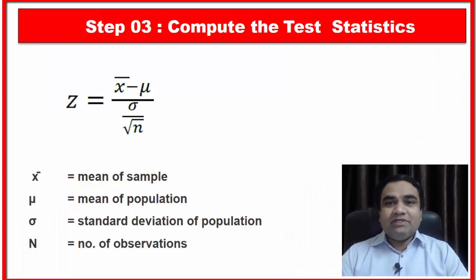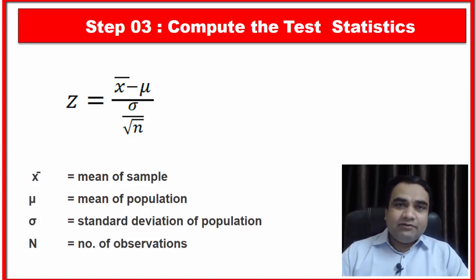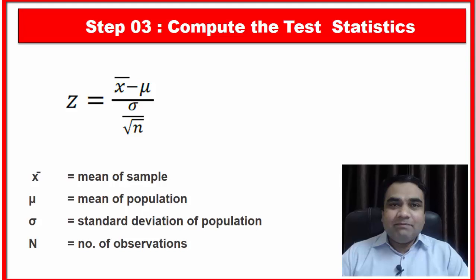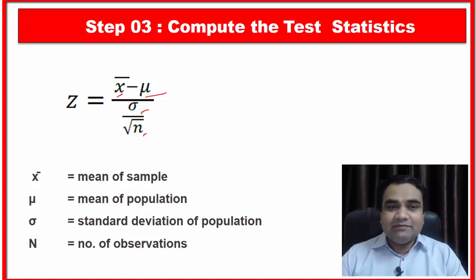The next step is to select your test statistics. There are many tests available — you can test your hypothesis using a z test, t test, or chi-square test. For the z test, you can use it when your sample size is more than 30 and you know sigma, the standard deviation of the population. The z formula is: z equals x-bar minus mu, divided by sigma divided by the square root of n. Here x-bar is the sample mean, mu is the population mean, sigma is the population standard deviation, and n is the sample size.